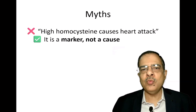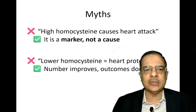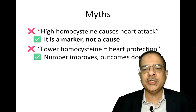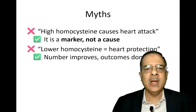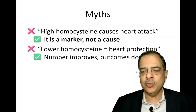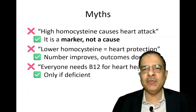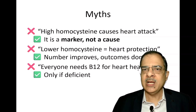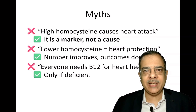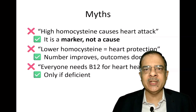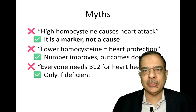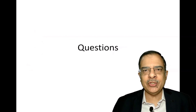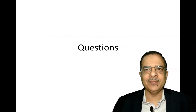Let's remove the myths. Myth: high homocysteine causes heart attack. Truth: the cause-and-effect relationship is not there — it's a marker, not a cause. Myth: lower homocysteine equals heart protection. Truth: the number improves but outcomes do not. Myth: everyone needs B12 for heart health. Truth: only if there is a deficiency. This was all about homocysteine levels — what causes high levels, when to test and when not to test, and when to treat. Thank you.